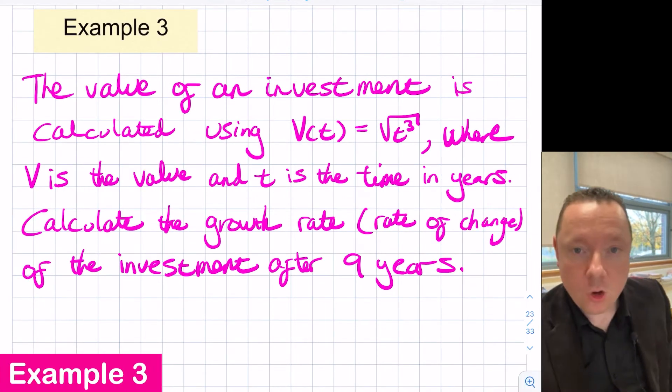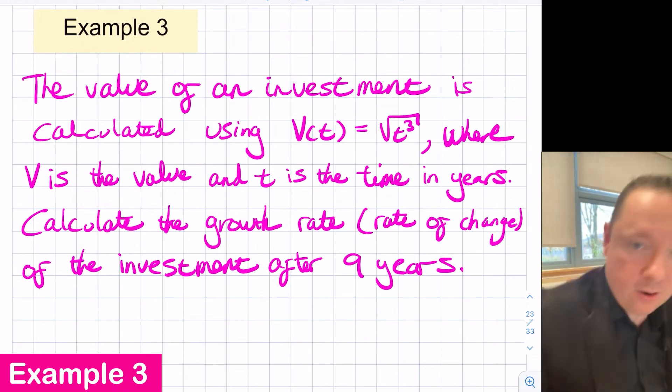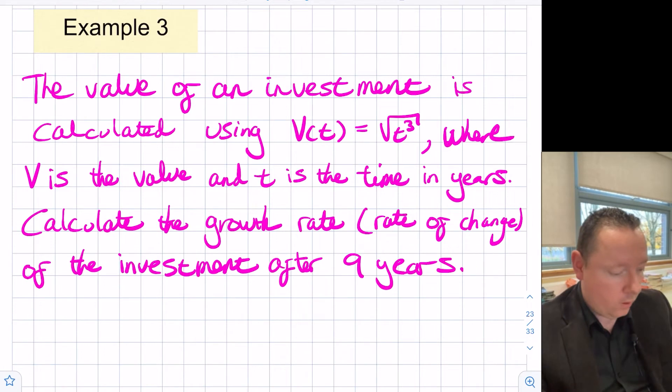Example three, the value of an investment is calculated using the formula v of t is the square root of t cubed, where v is the value of investment and t is the time in years. We have to calculate the growth rate, and it tells us that means the rate of change of the investment after nine years. So it mentions the rate of change, so we need to differentiate our formula.